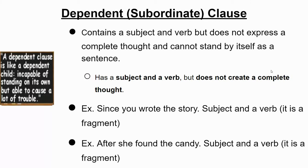You have a dependent or subordinate clause — it can be either or. It contains a subject and a verb, hence predicate — that's why it's a clause — but it does not express a complete thought. So 'since you wrote the story' — I have a subject 'you,' predicate 'wrote,' but I need more information. What about 'since you wrote the story'? So you need to add an independent clause to that. 'After she found the candy' — subject: she, predicate: found — you have your subject and predicate but it can't stand alone as a sentence. It's a dependent or subordinate clause.